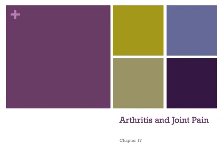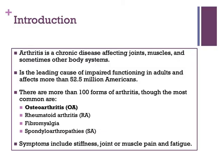Welcome to Chapter 17, Arthritis and Joint Pain. Arthritis is a chronic disease affecting joints, muscles, and sometimes other body systems. Because of the pain and disability, arthritis is the leading cause of impaired functioning in adults and affects about 52.5 million Americans. There are more than 100 forms of arthritis, though the most common forms are osteoarthritis, rheumatoid arthritis, fibromyalgia, and the spondyloarthropathies.